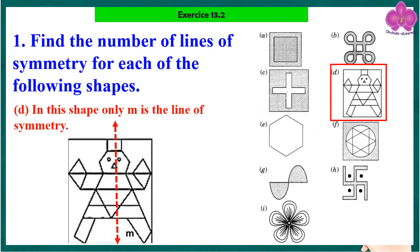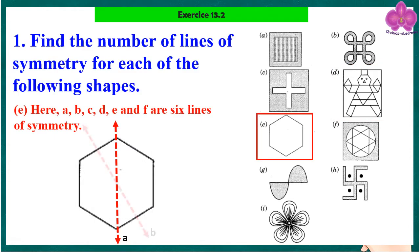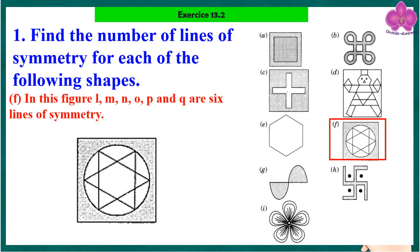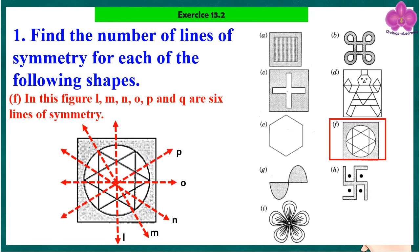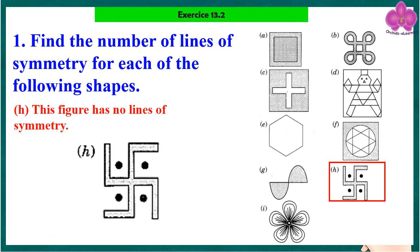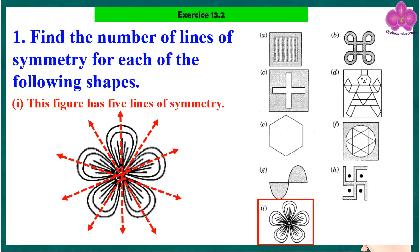In the fourth shape, only M is the line of symmetry. In the fifth figure, A, B, C, D, E, and F are six lines of symmetry. In the sixth figure, L, M, N, O, P, and Q are six lines of symmetry. The seventh figure has no lines of symmetry. The eighth figure has no lines of symmetry. The ninth figure has five lines of symmetry.